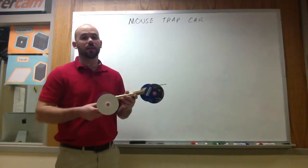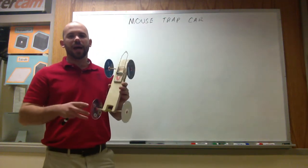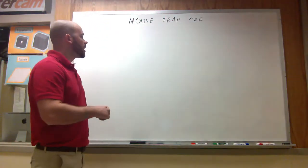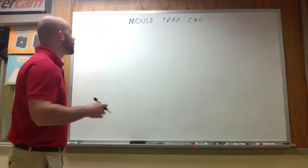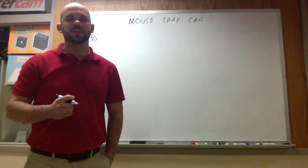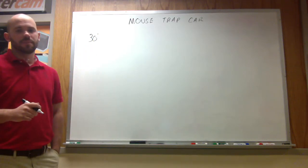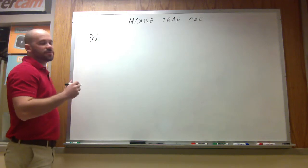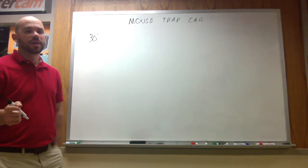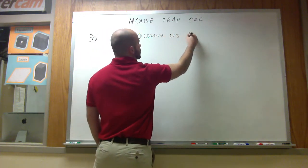Now there's a lot of elements that are going to come into play when we're looking at how we can make this vehicle travel. Our competition for class is going to be looking at who can make their mousetrap car travel the furthest distance down the hallway. We're looking to obtain a minimum of 30 feet. So 30 feet is going to be your minimum mark when you're designing this mousetrap car. The competition is for distance, not speed — that's a crucial element.